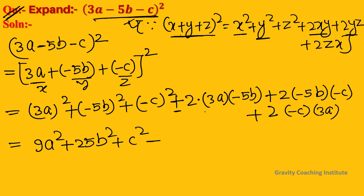Now we will multiply the signs. The numbers are 2, 3, 6, 6, 5, 3. Applying the signs — plus, minus, minus — it gives us -10bc and +6bc.